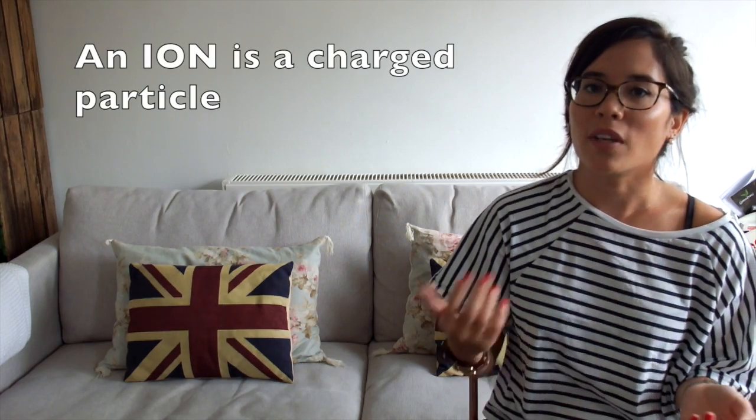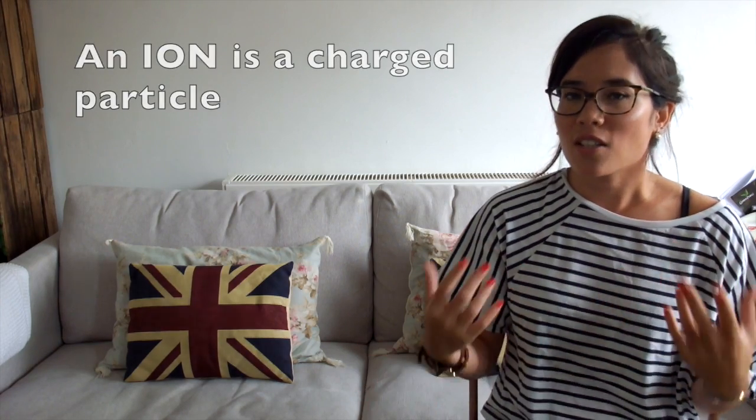First of all, we'll take ionic bonding. As the name suggests, ionic bonding involves ions. What is an ion? Now an ion is a charged particle. That means it has either a positive or negative charge. And what is that associated with? It's to do with electrons.